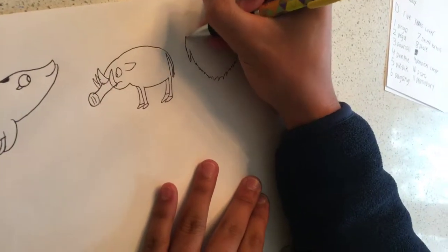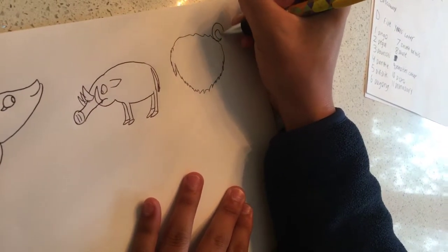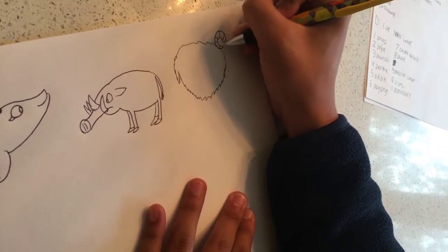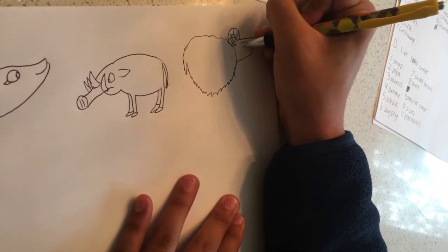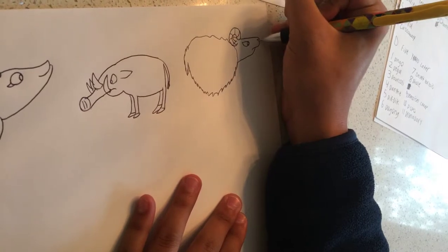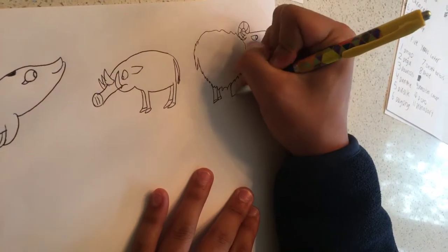To draw a barbato sheep, it has to be shaggy all over. The barbato sheep has to have a curly horn and a nose just like that. It needs to have hooves.